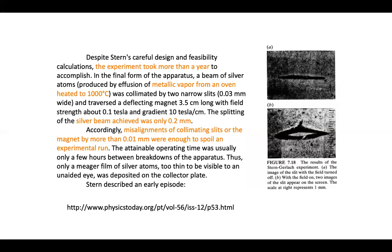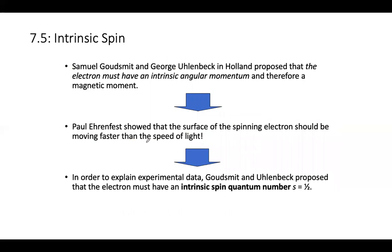The splitting into exactly two lines led Goldschmidt and Uhlenbeck to propose that electrons have an intrinsic spin — a quantum number of ±1/2 — separate from orbital angular momentum. Ehrenfest showed that if the electron were literally spinning, it would have to exceed the speed of light, but Goldschmidt and Uhlenbeck said it was intrinsic. This experimental result now adds a new quantum number to our description: n, l, m_l, and spin m_s.